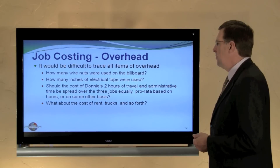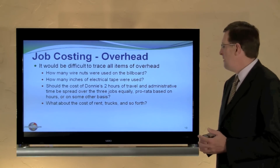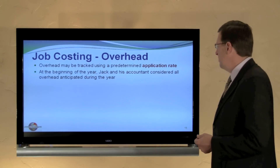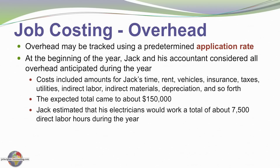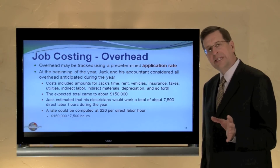The third cost component is overhead, and it's difficult to trace all overhead items — how many wire nuts were used on the billboard, how many inches of tape, how to spread Donny's two hours of travel and administrative time across jobs, or the cost of the truck and equipment. What normally occurs is that we determine an application rate. At the beginning of the year, Jack and his accountant estimated total overhead costs — rent, vehicles, insurance, taxes, indirect labor, and more — arriving at $150,000. They also estimated 7,500 hours of direct labor for the year. Dividing $150,000 by 7,500 hours gives $20 per hour as the overhead application rate.